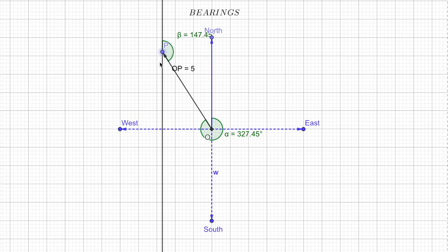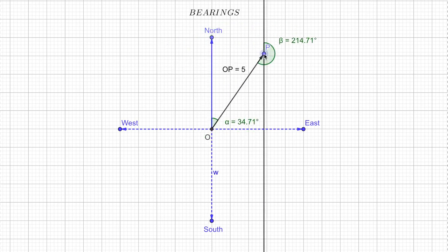So this is what bearing is all about. Bearing is nothing but the angle made by the line joining the origin with that point from the north direction. So here also you can see the angle is taken from north direction only. So here 214 is the bearing of O with respect to P, and 034 is the bearing of P with respect to O.